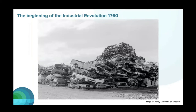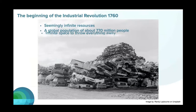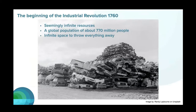Where does this problem come from? At the beginning of the Industrial Revolution, about 250–260 years ago, the world was a very different place. We had seemingly infinite resources, the global population was about 770 million people, and we had almost infinite space to throw everything away. Now we do not have infinite resources anymore, the global population is 10 times larger, and we clearly do not have infinite space. Does it make sense to keep applying the same rules from 270 years ago when we have almost eight billion people and finite resources?